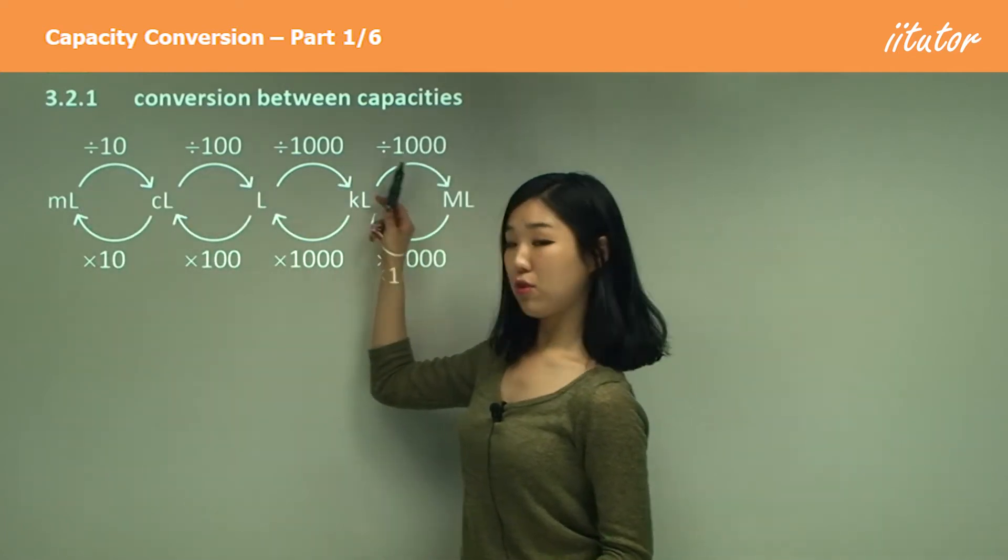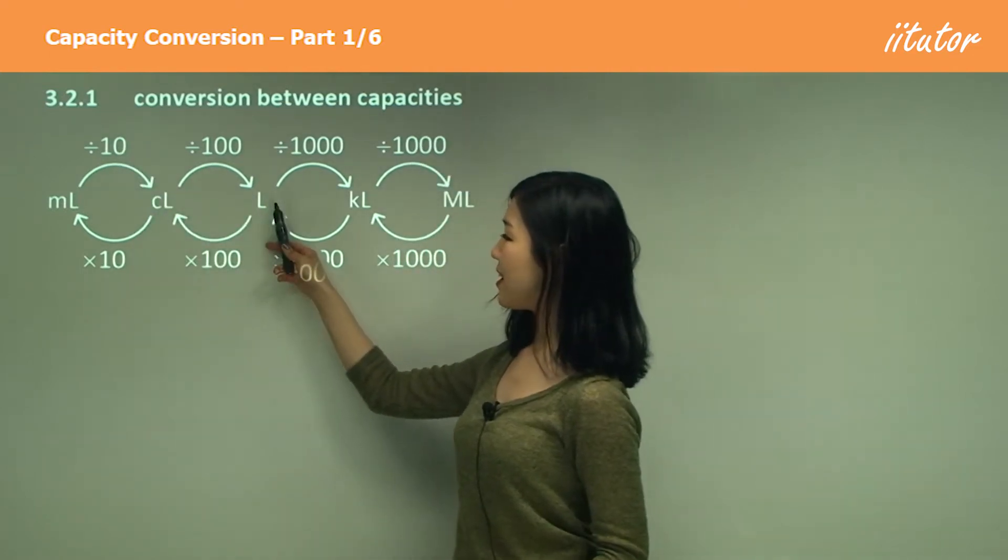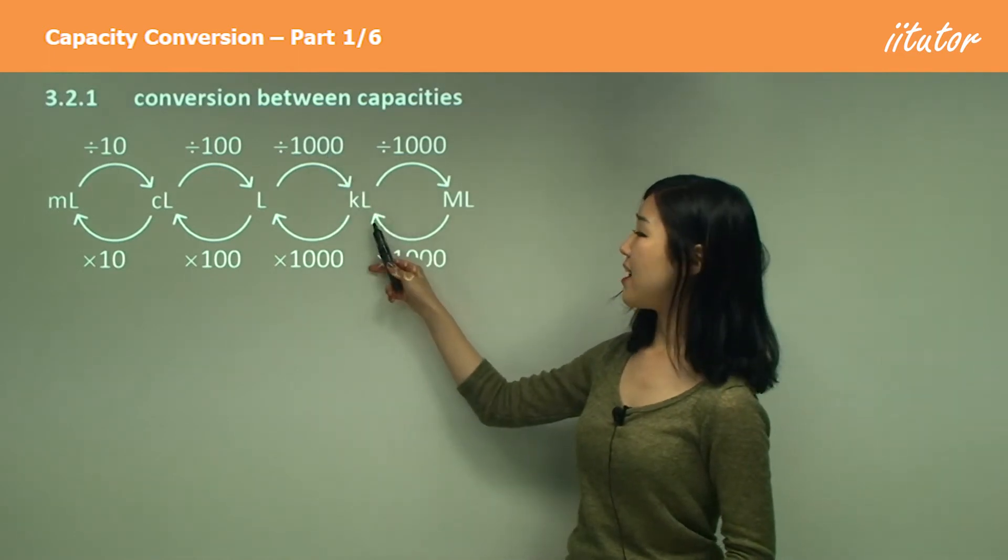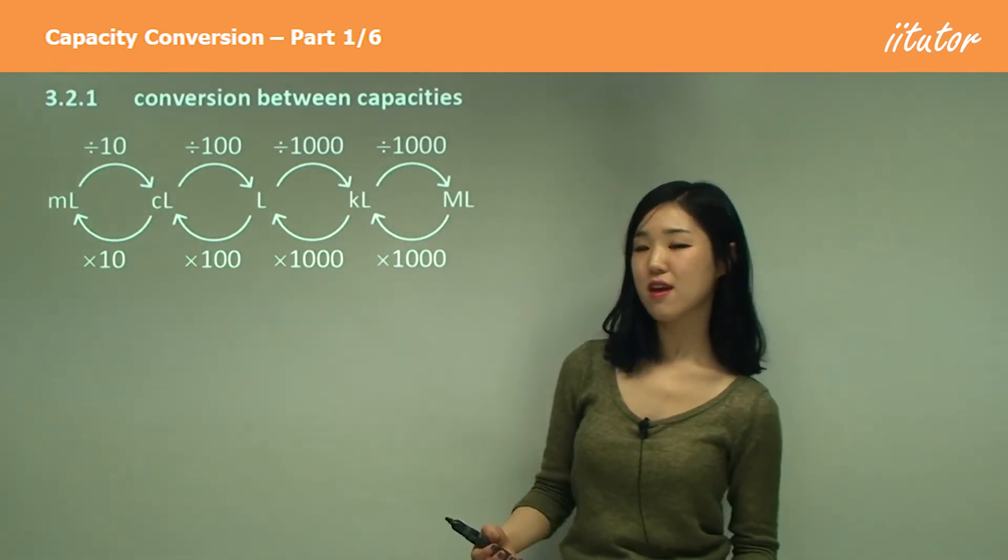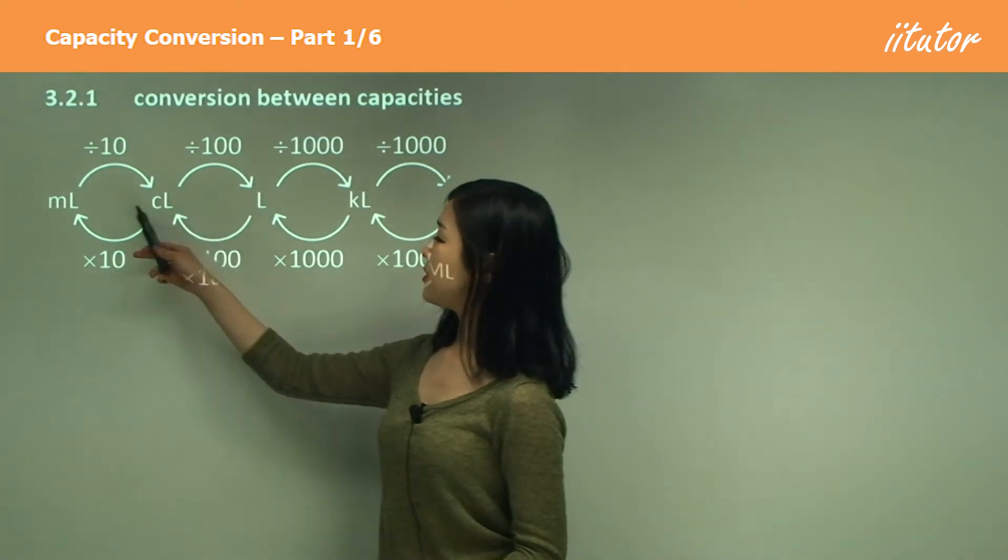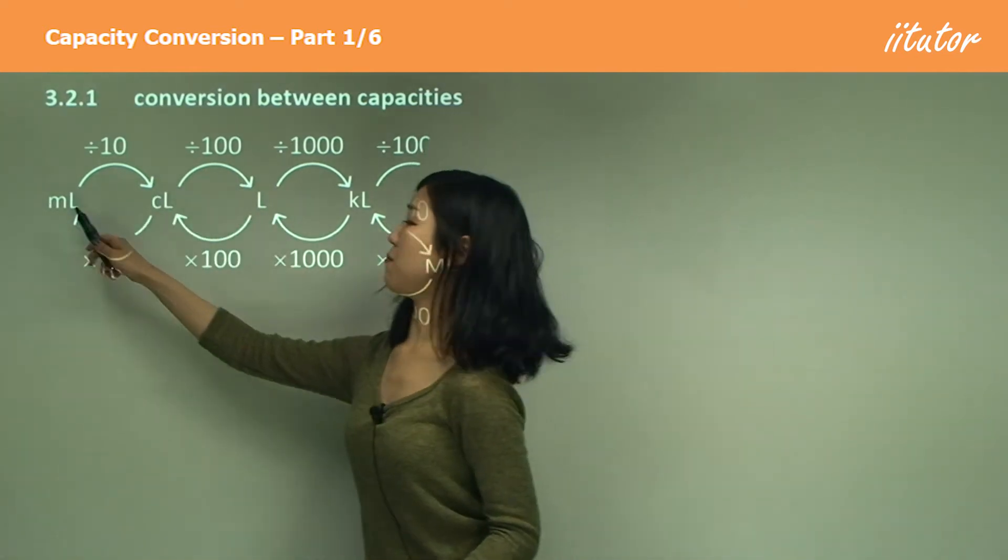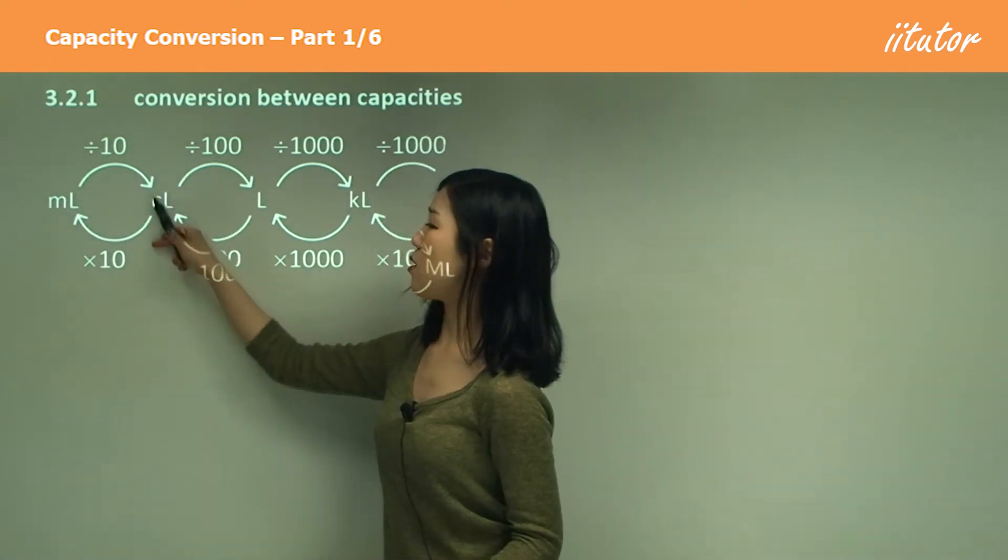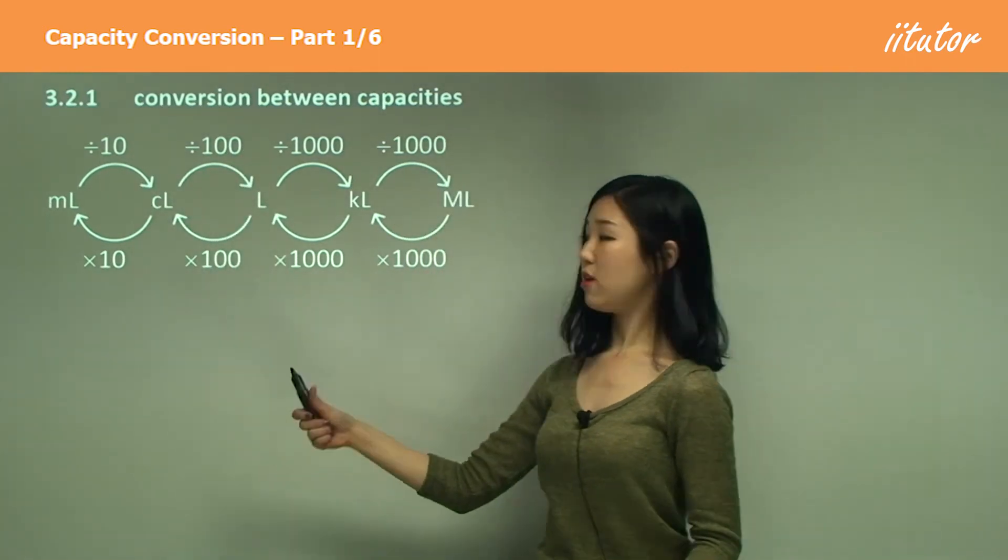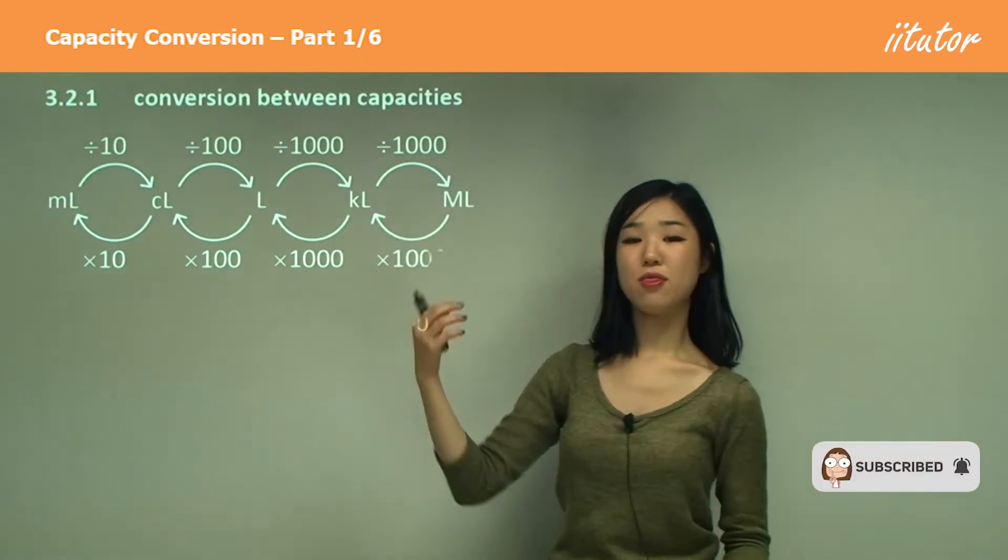But they have different amounts. From milliliters to centiliters, we divide by 10. Centiliters to liters by 100. Liters to kiloliters, 1000. And kiloliters to megaliters is also 1000. Remember the word kilo refers to 1000. So milliliters to liters is 1000. Milliliters to centiliters, we go through centiliters and then liters. So it's divided by 10 and 100, making 1000 in total. Liters to kiloliters is also 1000, and kiloliters to megaliters is also 1000.